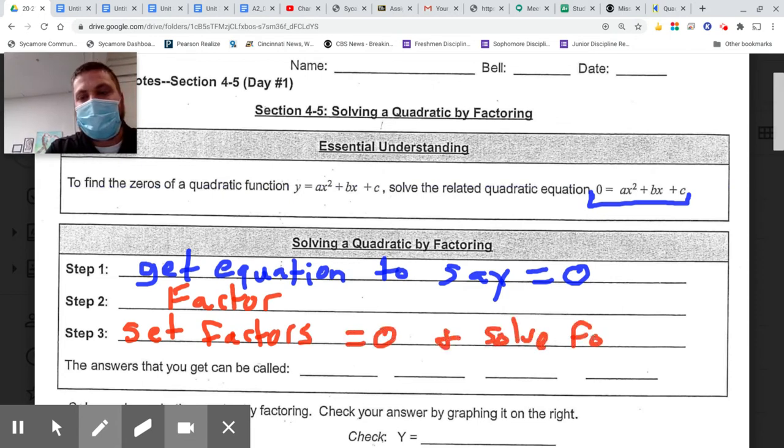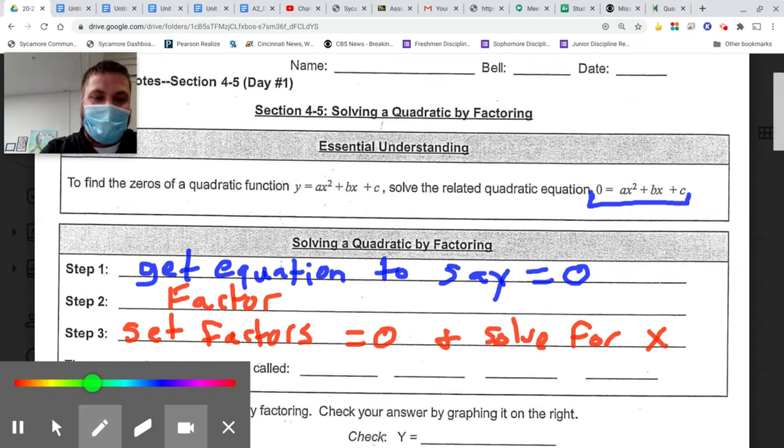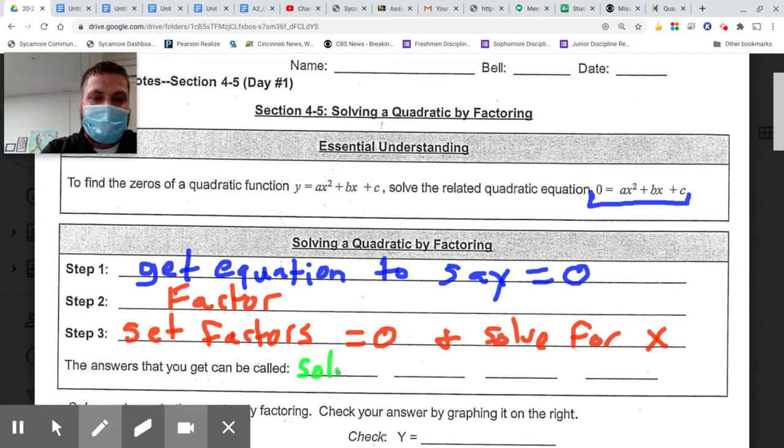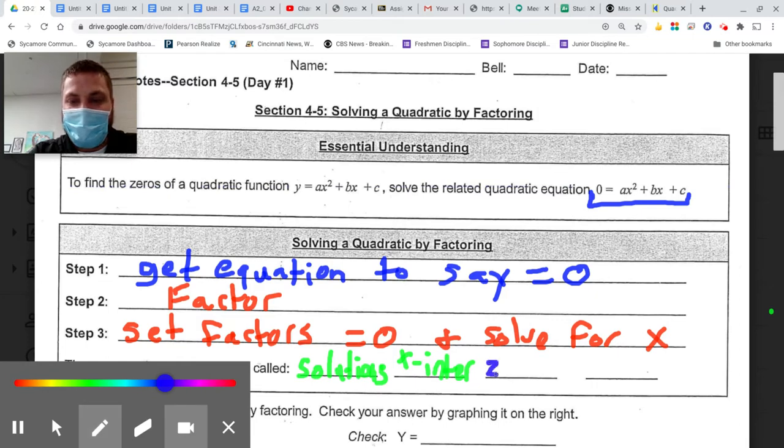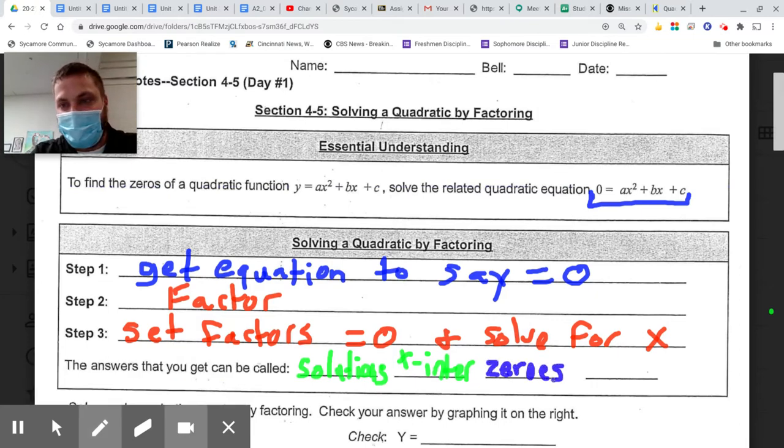Now one thing that you got to get used to here, a couple vocab words, is they can call these answers multiple different things. Pretty self explanatory and easy. First, they can call the answers to a quadratic solutions. Visually, what answers are to a quadratic, another thing they can call them is x-intercepts. These next two are vocab words: they can call them zeros, which makes sense because it's the x values that make the y equal zero. And then lastly, they can also call them roots.